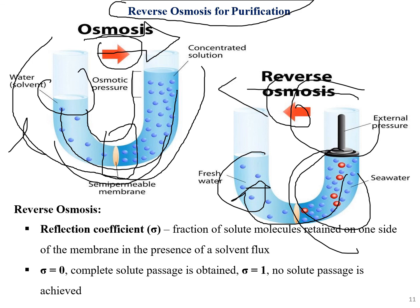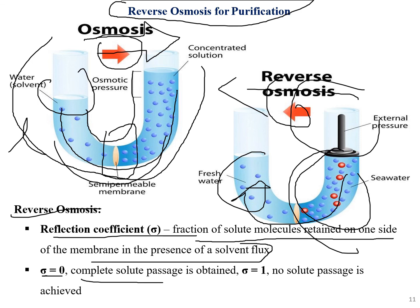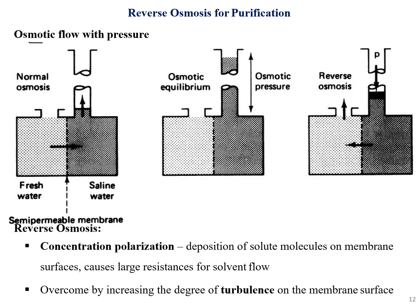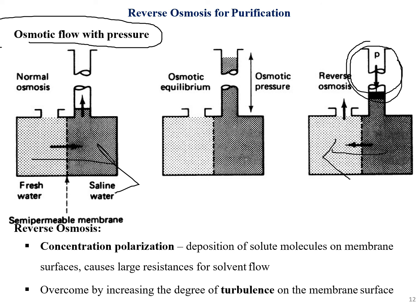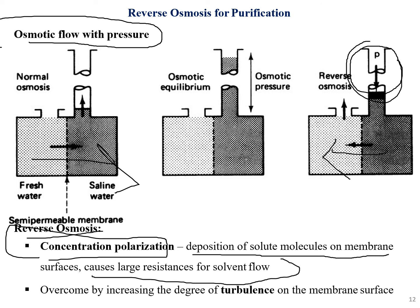Reverse osmosis has technical parameters such as the reflection coefficient — the fraction of solute molecules retained on one side of the membrane in the presence of solvent flux. A value of zero means complete solute passage is obtained; a value of one means no solute passes. Concentration polarization — the deposition of solute molecules on membrane surfaces causing larger resistance to solvent flow — can be overcome by increasing turbulence on the membrane surface.